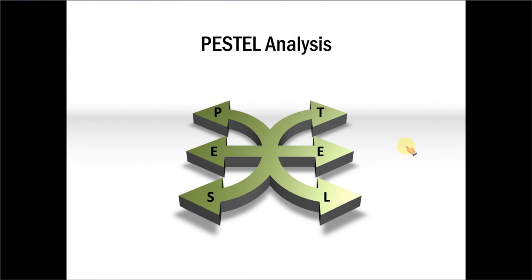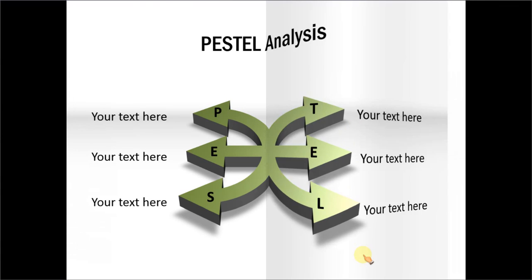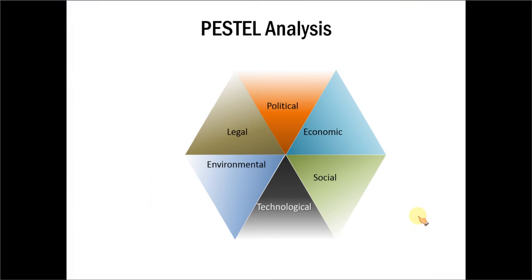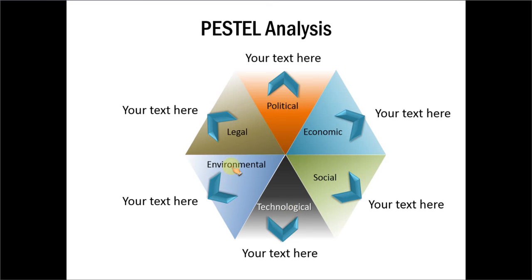Here is another example where we have tried to divide PESTEL analysis into two sections. Here is a third example of PESTEL analysis where we have elaborated on or expanded on the six factors here which happen to be political, economic, social, technological, environmental, and legal factors.